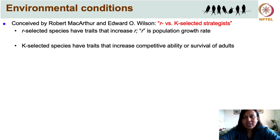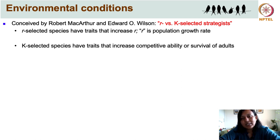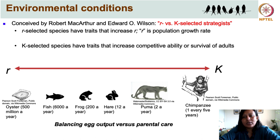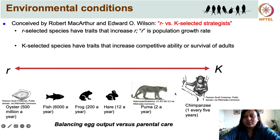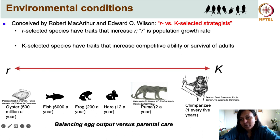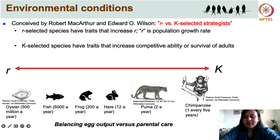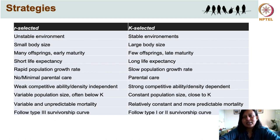R-selected species have traits that work towards increasing their reproductive output or population growth. K-selected species are those with traits that increase competitive ability of individuals or adult survival. Most species lie along a continuum moving from R-selected to K-selected, depending on their relative investment in reproduction versus maintenance of adults. For instance, short-lived small-bodied oysters produce up to 500 million eggs a year.